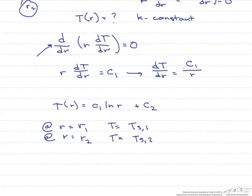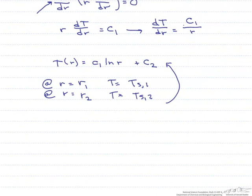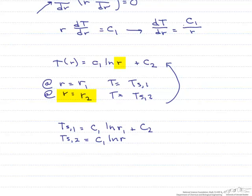So now, let's go back up here and apply our boundary conditions. That's going to leave us with two equations. The first one will say Ts,1 equals c1 ln(r1) plus c2. That's using the first set of boundary conditions. Using the second one, Ts,2 equals c1 ln(r2) plus c2.